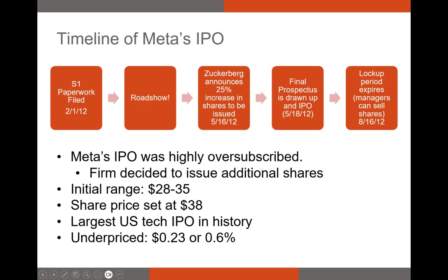Let's take a look at Meta's IPO. Meta became publicly traded in 2012. In early 2012, Meta was working with its syndicate, which included JP Morgan, Morgan Stanley, and Goldman Sachs. The syndicate put out the S1 statement on February 1st, 2012, and then Mark Zuckerberg and the members of the syndicate began the roadshow. When they took Meta on the roadshow, what they found was that there was enormous demand to buy shares of Meta's stock.